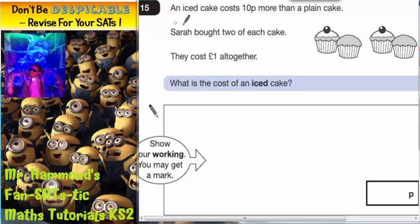It says an iced cake costs 10p more than a plain cake. Sarah bought two of each cake. The iced cakes are 10p more than the plain cakes. They cost one pound altogether. What is the cost of an iced cake?